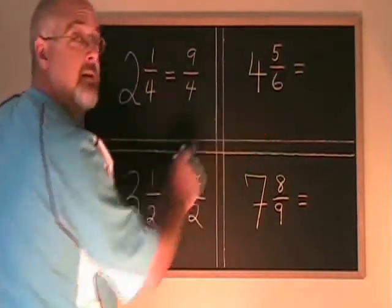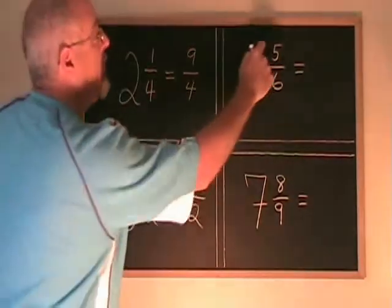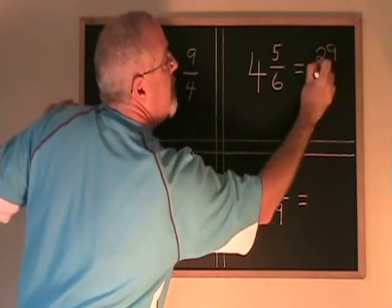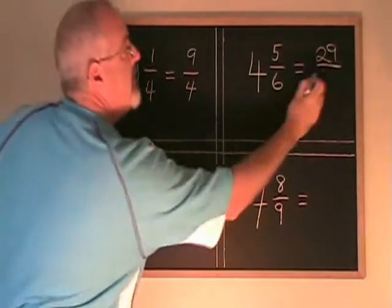4 times 6 is 24 plus 5 is 29. The denominator remains the same.